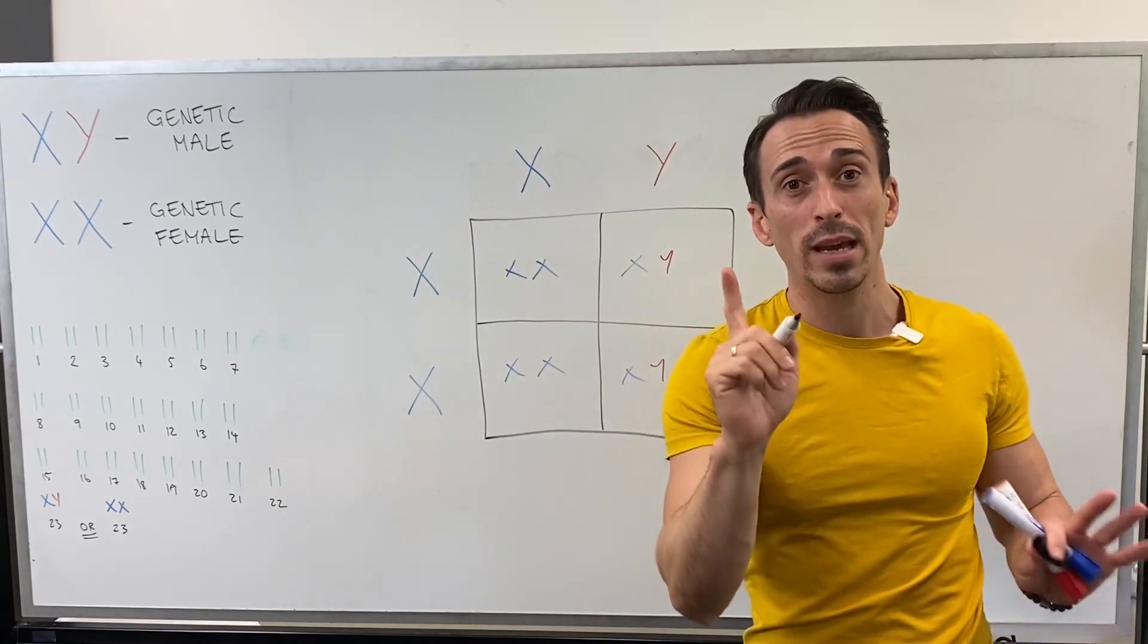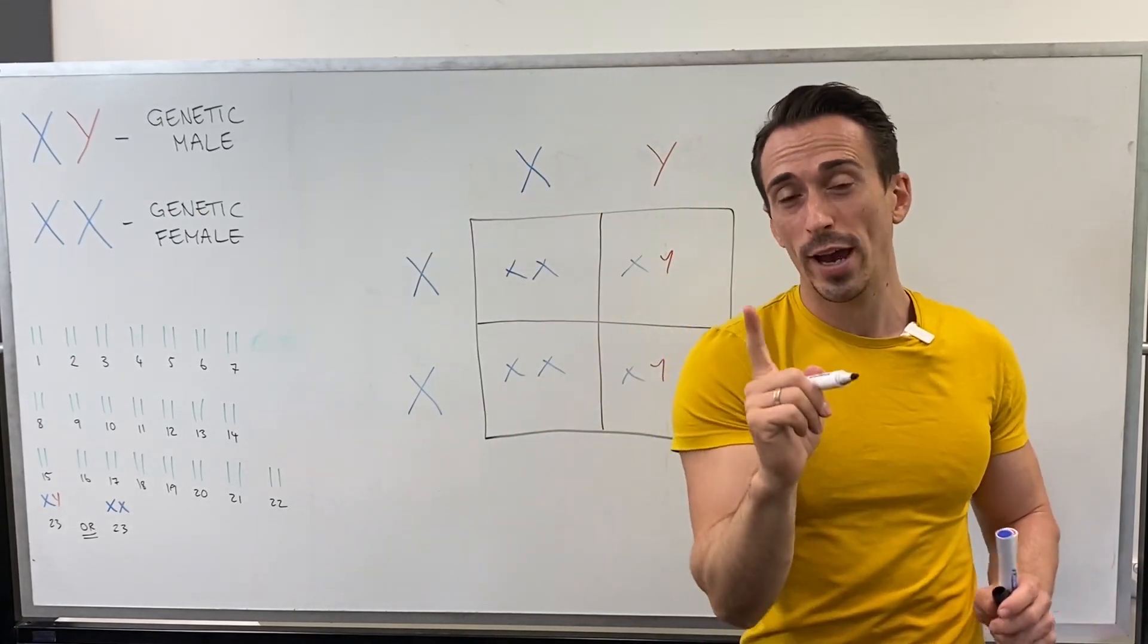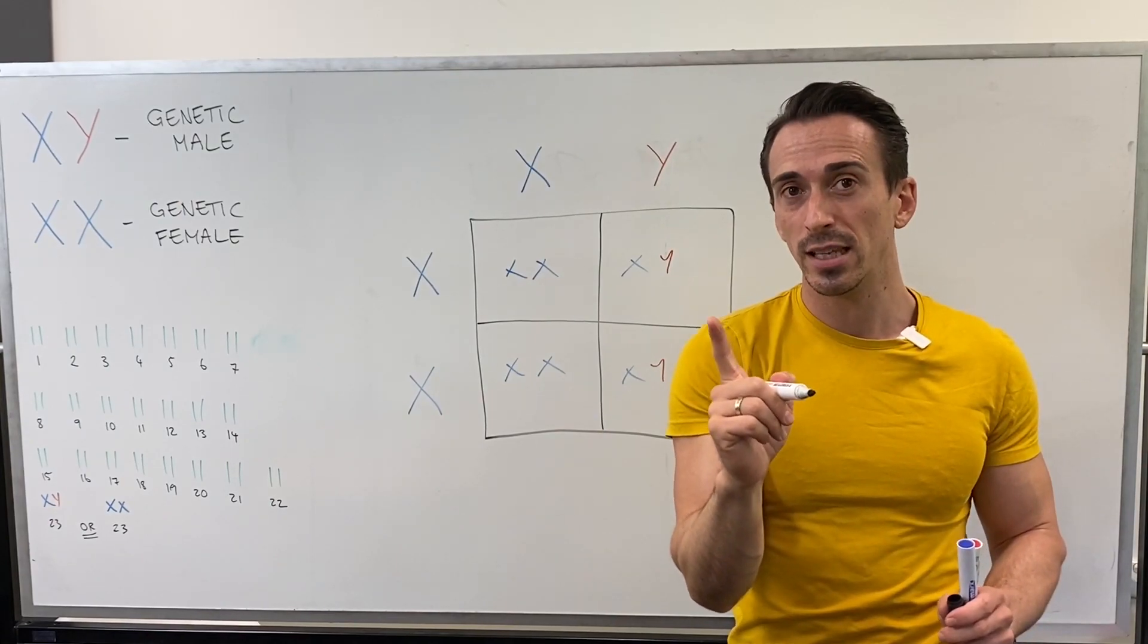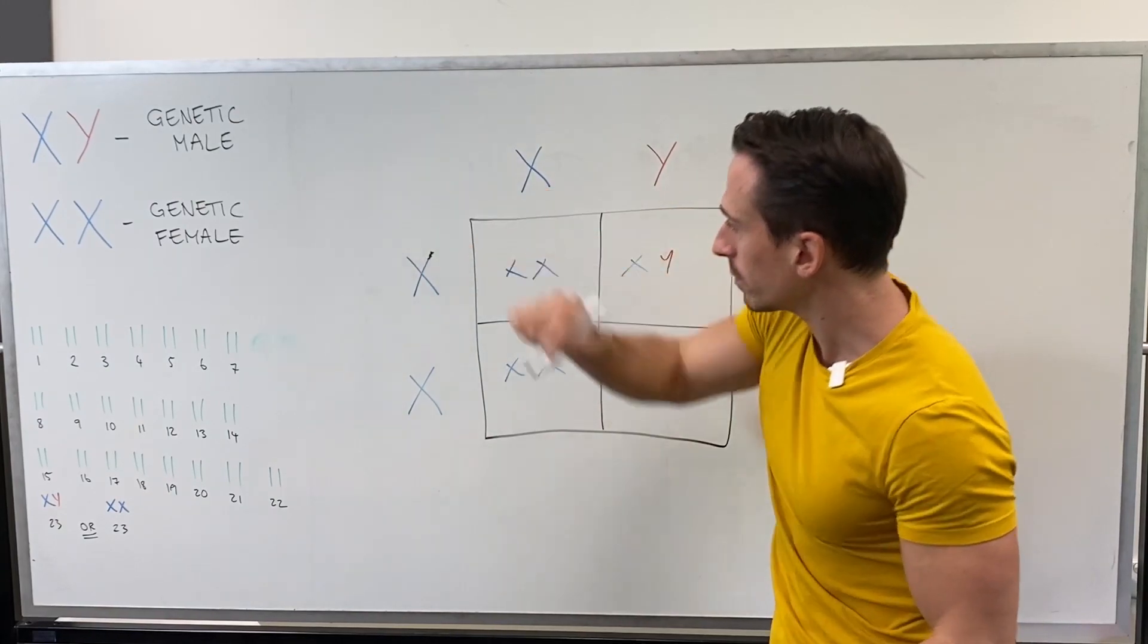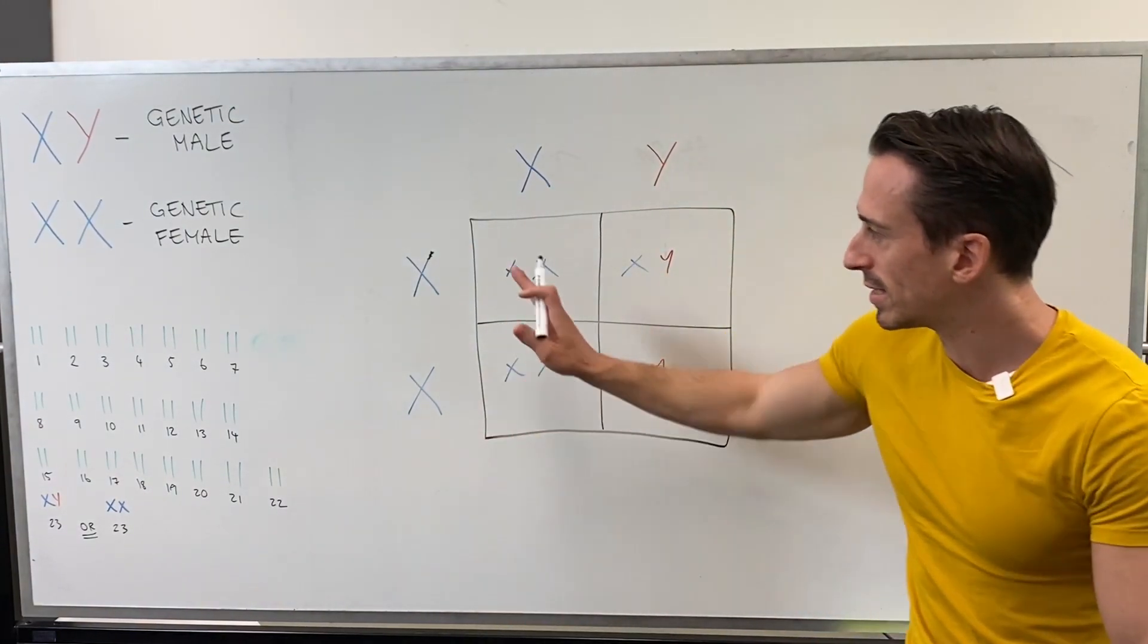So the way I'm going to denote that is that she's a carrier, so it means that she only has one of her X chromosomes contains the, let's just say, dodgy gene for haemophilia, and it's sitting here. Recessive.